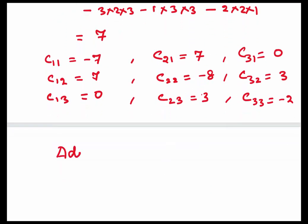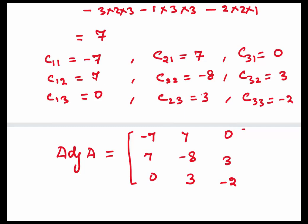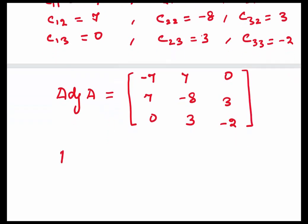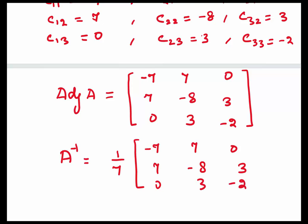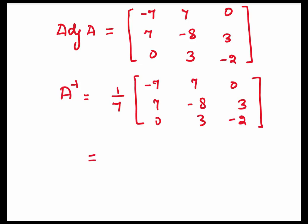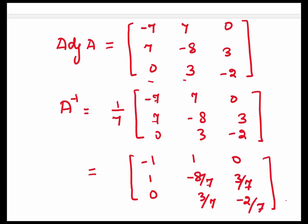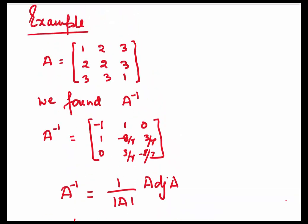We have all the cofactors, so let's write the adjoint. We copy the column values as is: minus 7, 7, 0, 7, minus 8, 3, 0, 3, minus 2. The determinant is 7. So the inverse is 1 upon 7 multiplied by the adjoint, giving us the matrix with entries minus 1, 1, 0, 1, minus 8 by 7, 3 by 7, 0, 3 by 7, minus 2 by 7. This is the same inverse we found in our previous video.